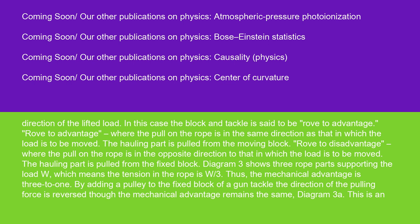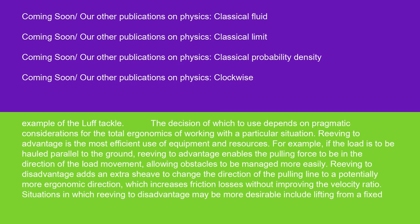Rove to disadvantage: Where the pull on the rope is in the opposite direction to that in which the load is to be moved, the hauling part is pulled from the fixed block. Diagram 3 shows 3 rope parts supporting the load W, which means the tension in the rope is W / 3. Thus, the mechanical advantage is 3 to 1. By adding a pulley to the fixed block of a gun tackle, the direction of the pulling force is reversed though the mechanical advantage remains the same, Diagram 3A. This is an example of the luff tackle.